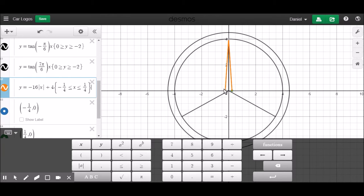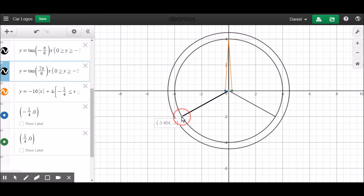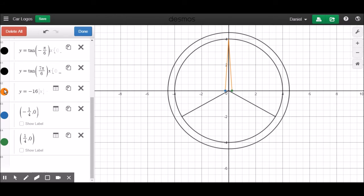Right, and then the next line that we need to find is the one that goes from this point to negative 1/4 comma 0, and over here, which is not a nice x value right here. This is negative 3.464. You know what, I want to look around to see if there's a better way to draw a line through these two points.